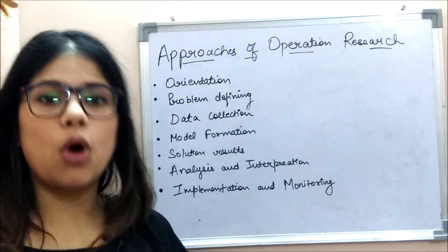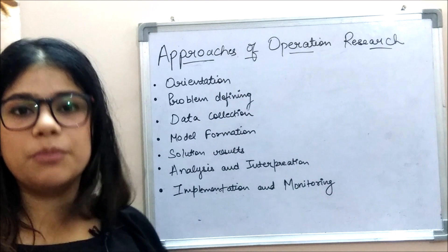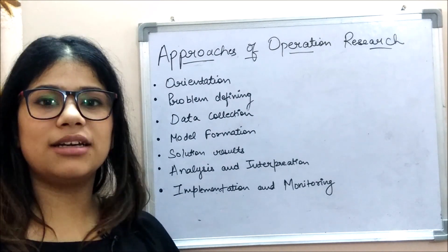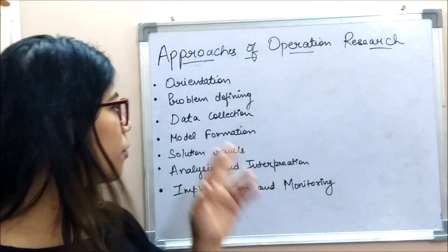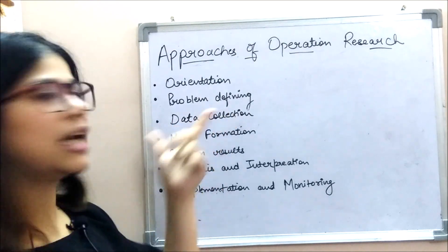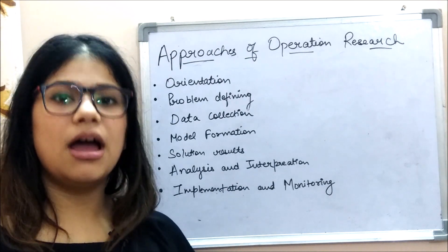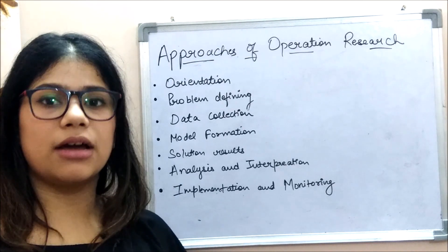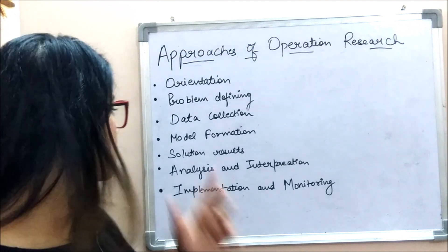When we define the problem, the next step is data collection. The objective of data collection is so that we can easily model the problem. Data are of two types: primary data, which we have to gather ourselves by going into different situations, and secondary data, which is data already found from previous standards.